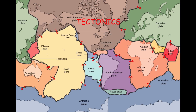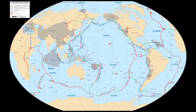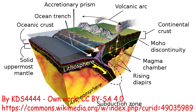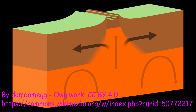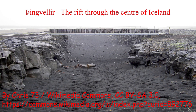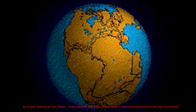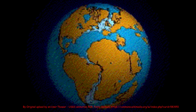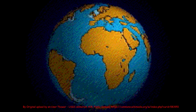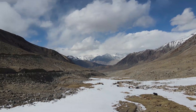Lastly, tectonics are the processes that control the structure and properties of the earth's crust and its evolution through time. There are many tectonic plates on earth, and as these collide, separate, and slide against each other over time, they will create some truly spectacular landscapes and landforms.